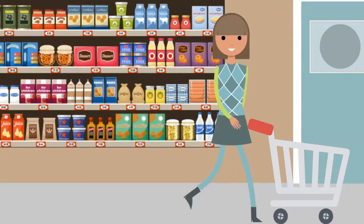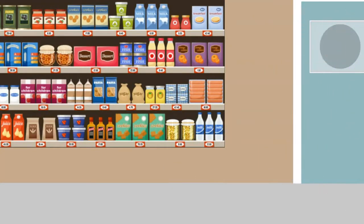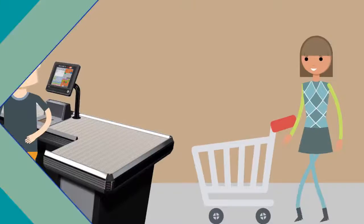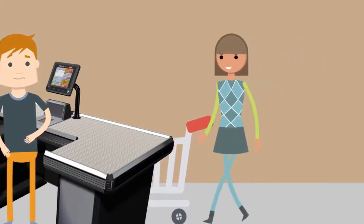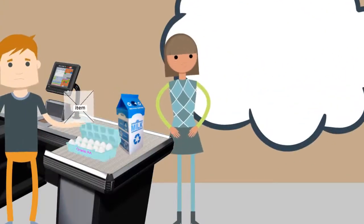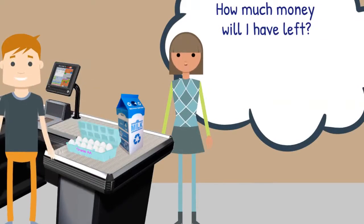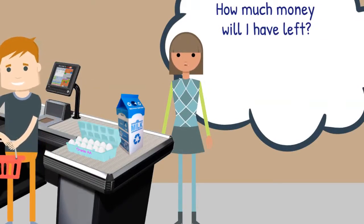Let's head to the register to solve our second problem. Our second question asks, how much money will I have left over after buying these things? Now that we know the cost, we can find out how much remains after buying the milk and eggs.